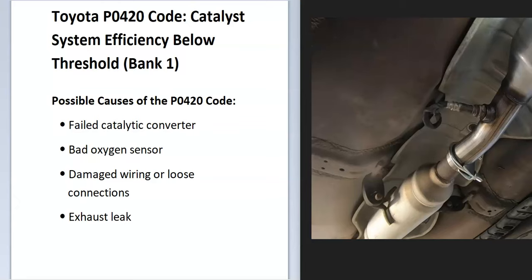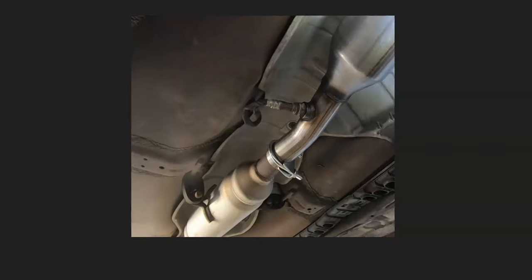Some of the possible causes: it could be a failed catalytic converter, a bad oxygen sensor, bad wiring going to the oxygen sensor, or possibly an exhaust leak. When you get this code, keep in mind there are two oxygen sensors — one before the catalytic converter and one after — and this is what the onboard computer uses to measure the efficiency of the catalytic converter.